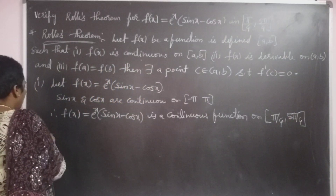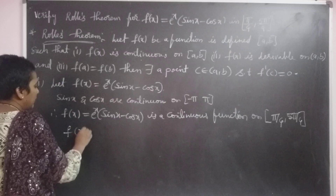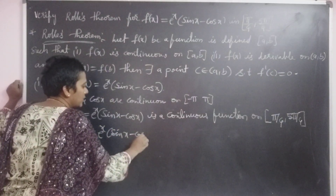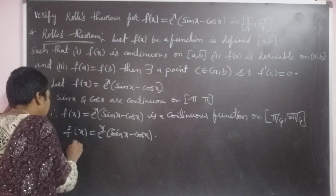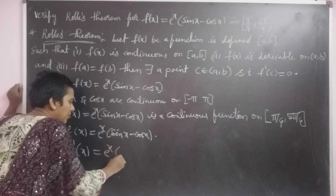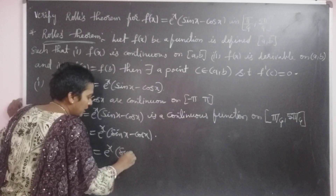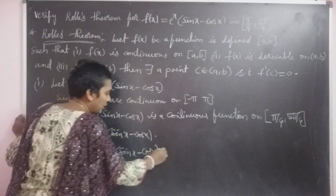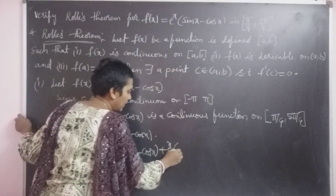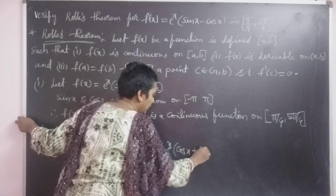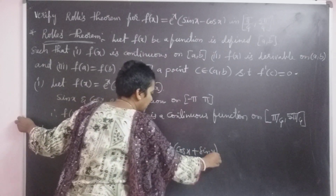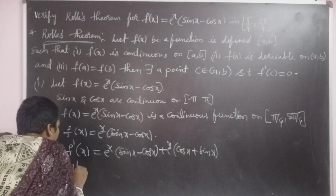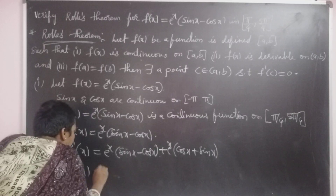Second condition: f of x equal to e power x into sin x minus cos x. Then f dash of x equal to e power x into sin x minus cos x plus e power x into cos x plus sin x, using the product rule where the derivative of e power x is e power x, derivative of sin x is cos x, and derivative of cos x is minus sin x. Therefore f of x is derivable.